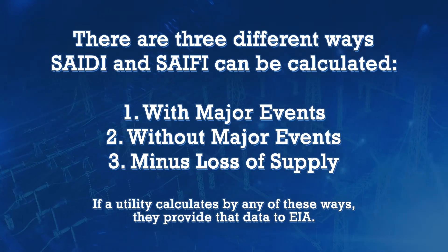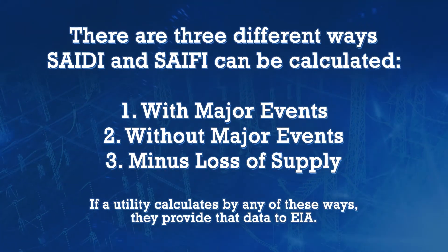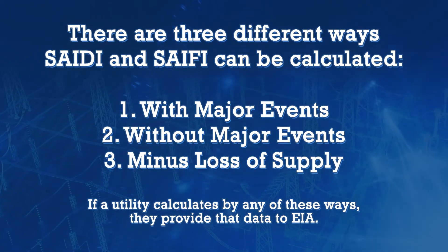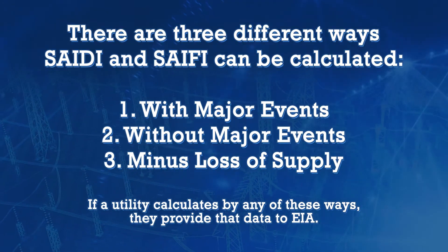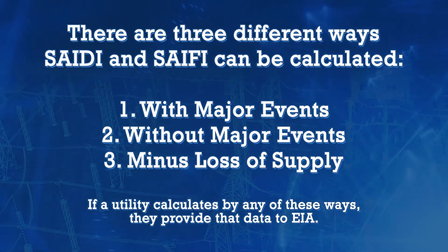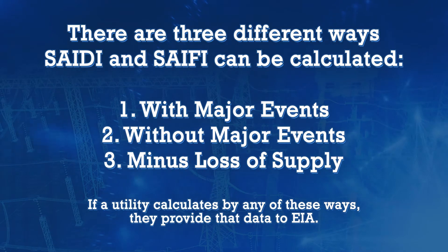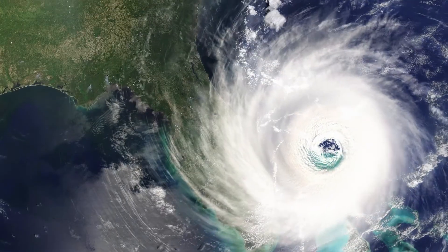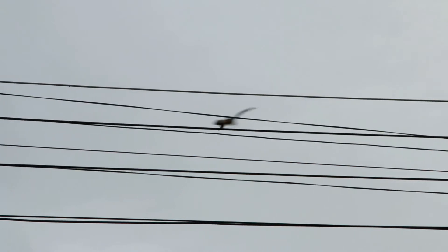There are three different ways SAIDI and SAIFI can be calculated: with major events, without major events, and minus loss of supply. If a utility calculates by any of these ways, they provide that data to EIA. With major events includes all non-momentary outages — everything included, from big storms to pesky wildlife.